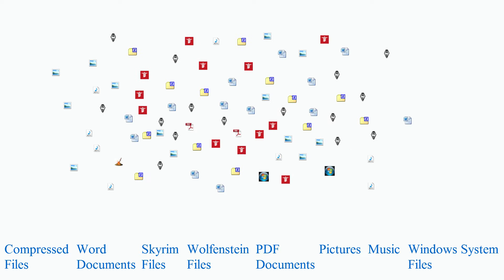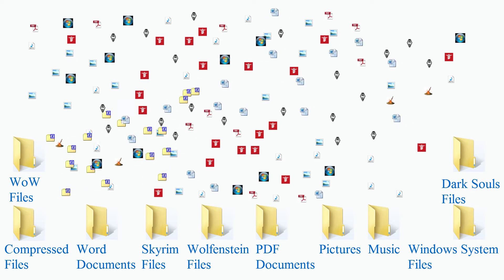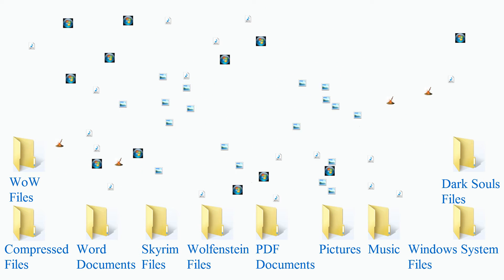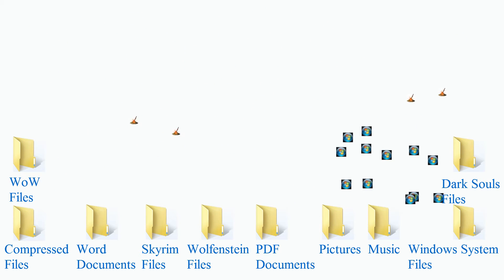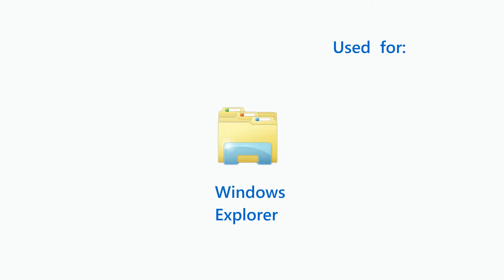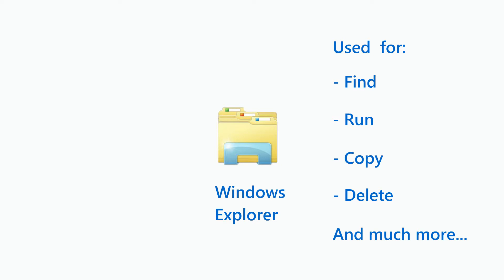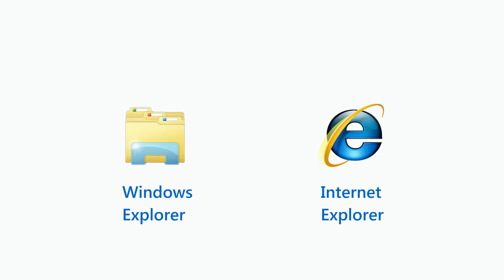So what's the difference between files and folders? And what's Windows Explorer? Files are the data stored on your hard drive. Folders help us organize this data by storing similar items together. Windows Explorer is a program that makes it easy to find, run, copy and delete files. By the way, I'm not talking about Internet Explorer — they are completely separate things.